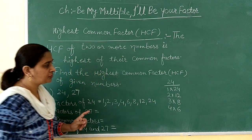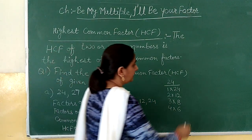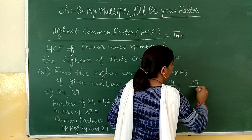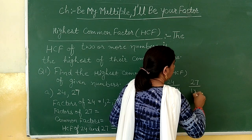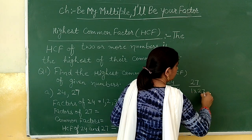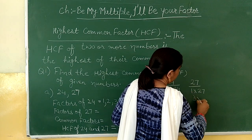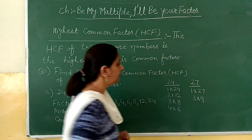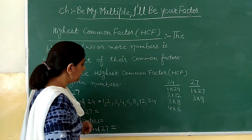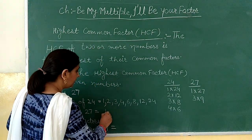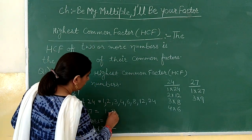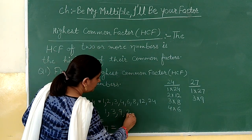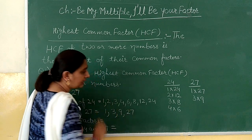Now, factors of 27. One times twenty-seven gives us twenty-seven, and three times nine gives us twenty-seven. So the factors of 27 are: one, three, nine, twenty-seven.